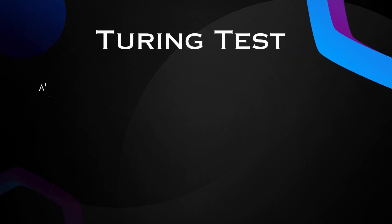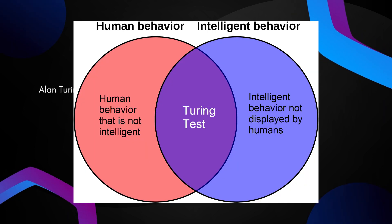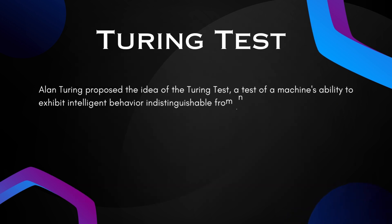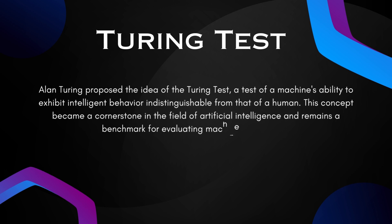Turing Test: Alan Turing proposed the idea of the Turing Test, a test of a machine's ability to exhibit intelligent behavior indistinguishable from that of a human. This concept became a cornerstone in the field of artificial intelligence and remains a benchmark for evaluating machine intelligence.